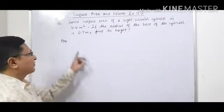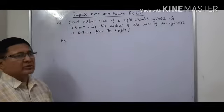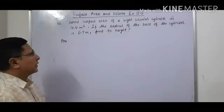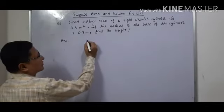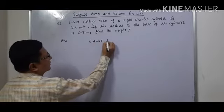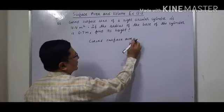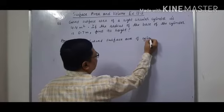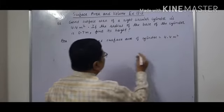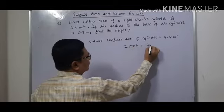Now let us solve question number 6 of exercise 13.2. The curved surface area of the right circular cylinder is 4.4 meter square. The radius of the base of the cylinder is 0.7 meter. It is given that the curved surface area of the cylinder equals 4.4 meter square. We know the formula of curved surface area of cylinder, that is 2πrh equals 4.4.